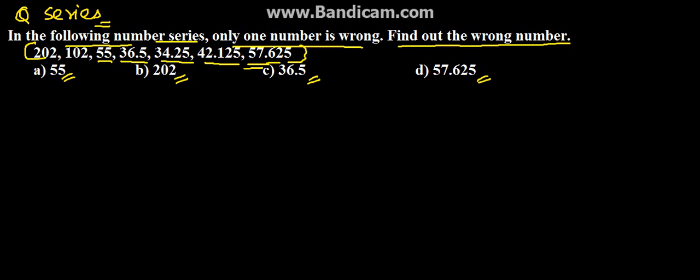To begin with the solution, first we need to find the relation between the series. Suppose this is the series: 202, 102, 55, 36.5, 34.25, 42.125, 57.625. So if we see the first two numbers...